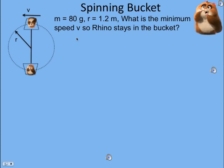Where is he most likely to lose contact with the bucket? That would be at the top of the circle when gravity is pulling him directly away from the bottom of the bucket. So if we solve for the minimum speed that he needs to stay in contact at the top, he will stay in contact everywhere else.